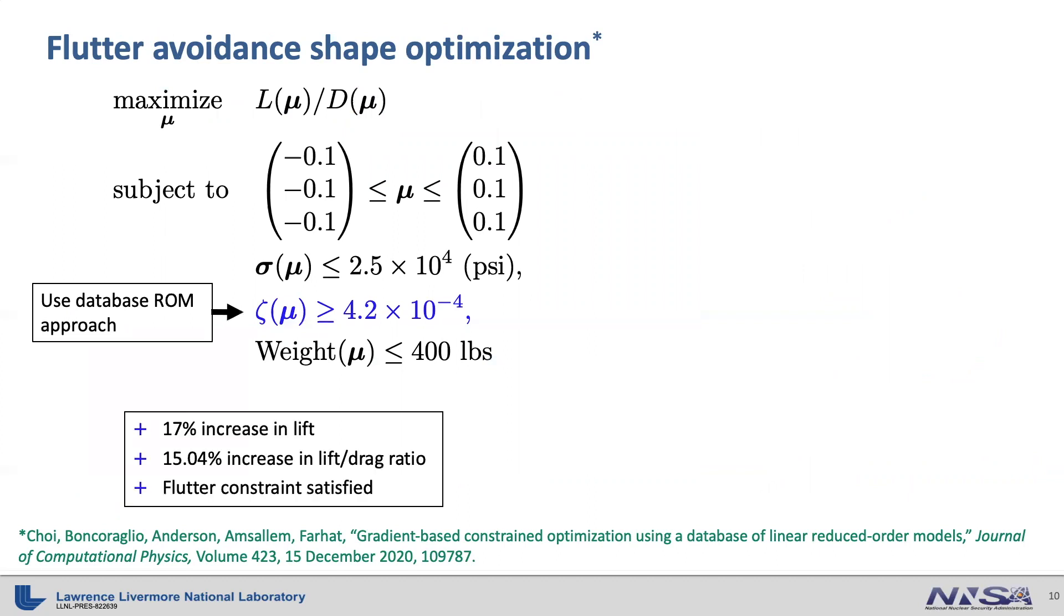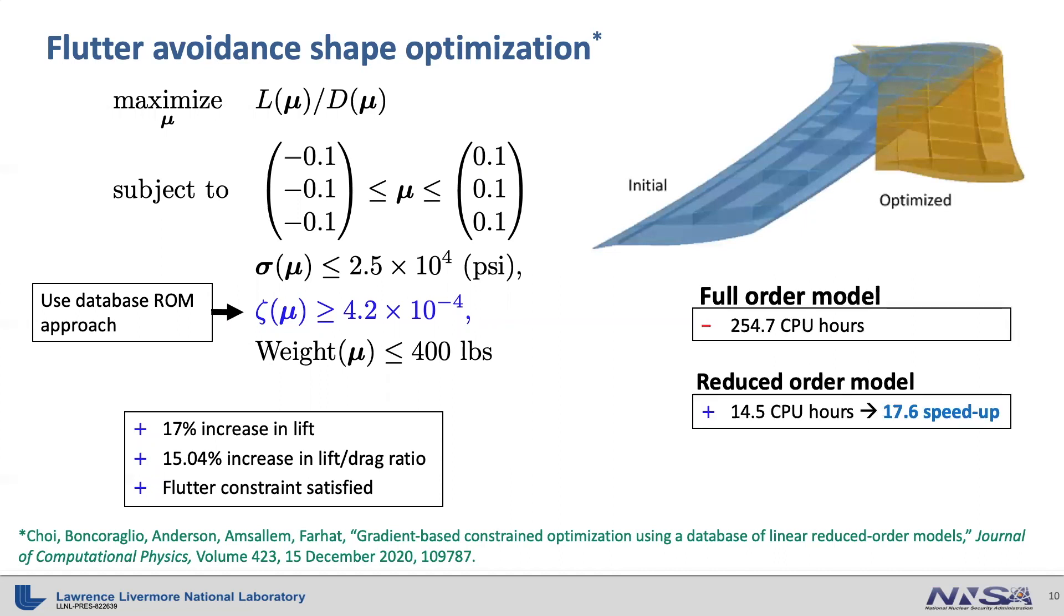If you solve this problem, whether you use full order model or reduced order models, you get the same improvement of 17% lift increase, 15% increase in lift-drag ratio with flutter constraints satisfied. With this optimal shape of the wing, if you use the full order model, then the whole optimization process takes 254.7 hours while the reduced order model only takes 14.5 hours which gives a 17.6 CPU hour speedup.